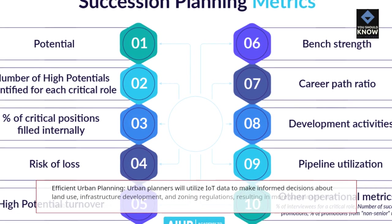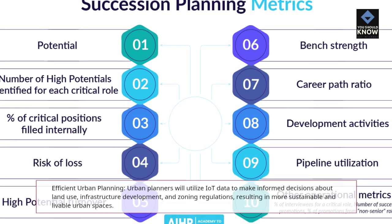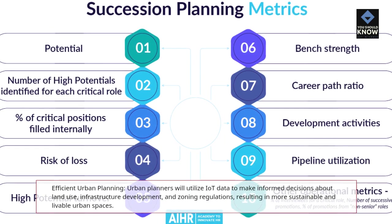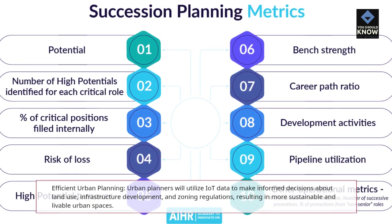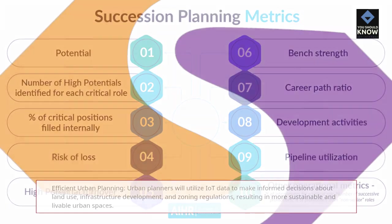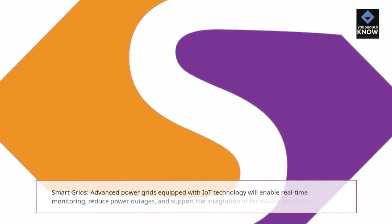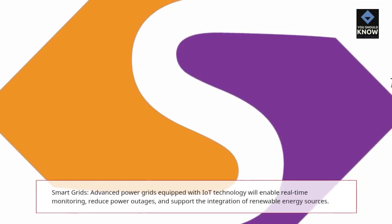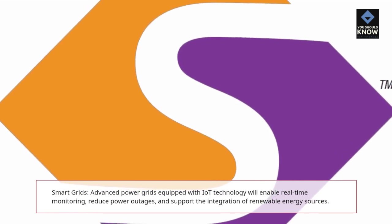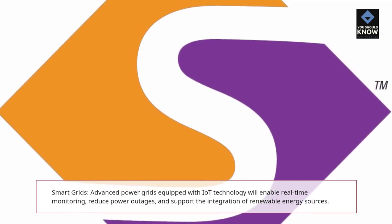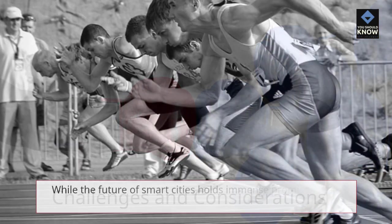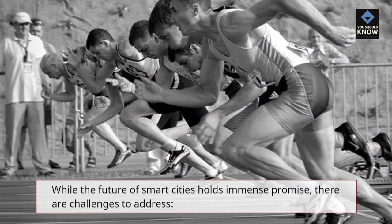Urban planners will utilize IoT data to make informed decisions about land use, infrastructure development, and zoning regulations, resulting in more sustainable and livable urban spaces. Advanced power grids equipped with IoT technology will enable real-time monitoring, reduce power outages, and support the integration of renewable energy sources.